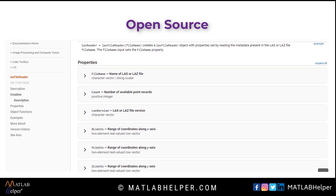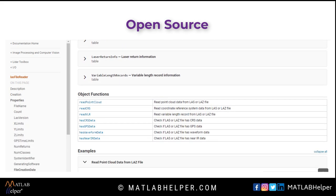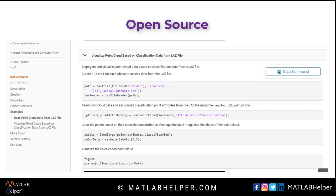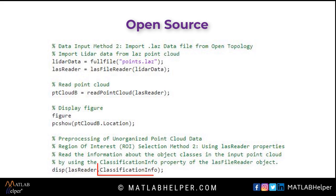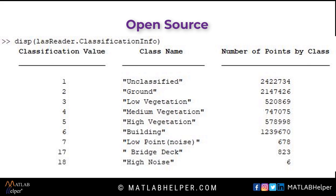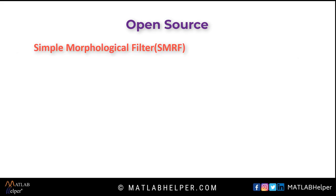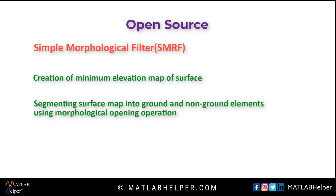For LAS or LAZ files, MATLAB has a LAS reader object which can be used to read, write, and obtain classification information of detected objects. The LAS file reader reads the LAS point cloud data file as an object, and a point cloud is created using the read point cloud function — this is an unorganized point cloud, so we cannot use the same processing techniques as earlier. You can either use the region of interest property or use the classification information property of the LAS file reader object. We use the segment ground SMRF function — SMRF stands for Simple Morphological Filter. This algorithm involves: creation of a minimum elevation map of the surface, segmenting the surface map into ground and non-ground elements using a morphological opening operation, and segmenting the original point cloud data.